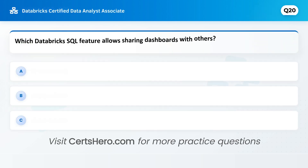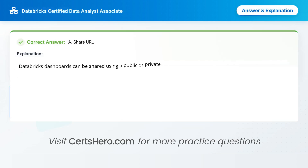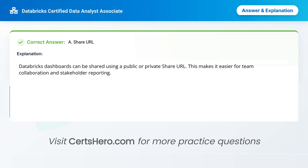Here's one to finish strong. Which Databricks SQL feature allows sharing dashboards with others? A. Share URL. B. Query history. C. Cluster pools. Correct answer is A: Share URL. Databricks dashboards can be shared using a public or private share URL. This makes it easier for team collaboration and stakeholder reporting.